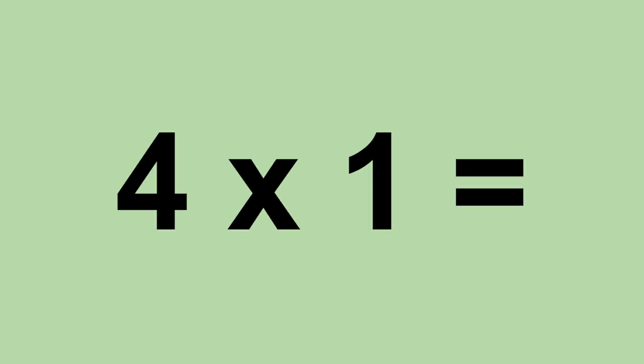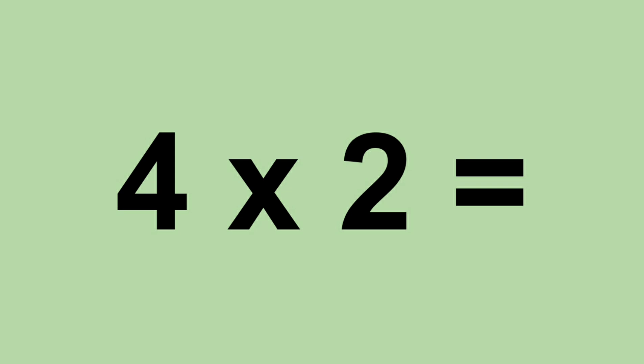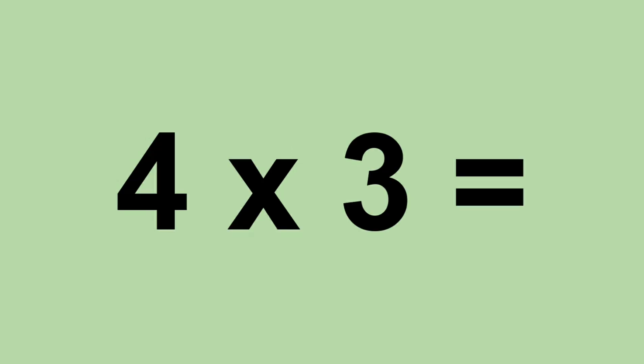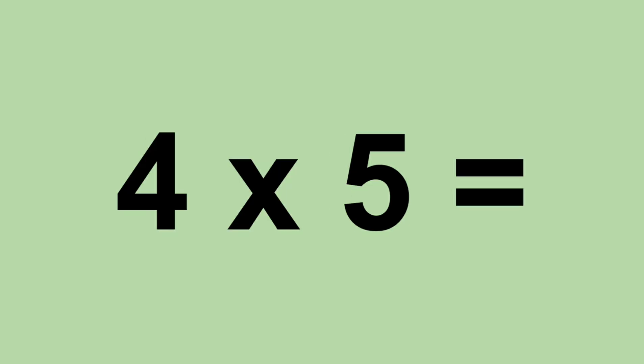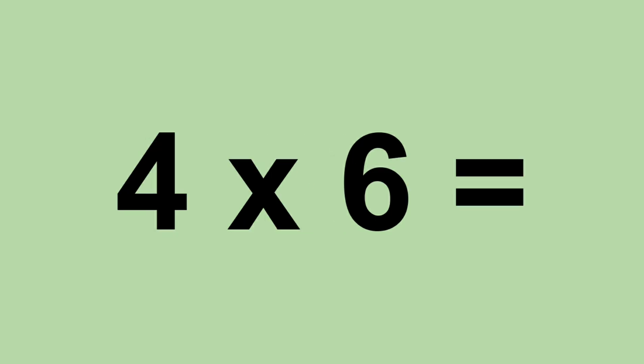Four times zero equals zero. Four times one equals four. Four times two equals eight. Four times three equals twelve. Four times four equals sixteen. Four times five equals twenty. Four times six equals twenty-four.